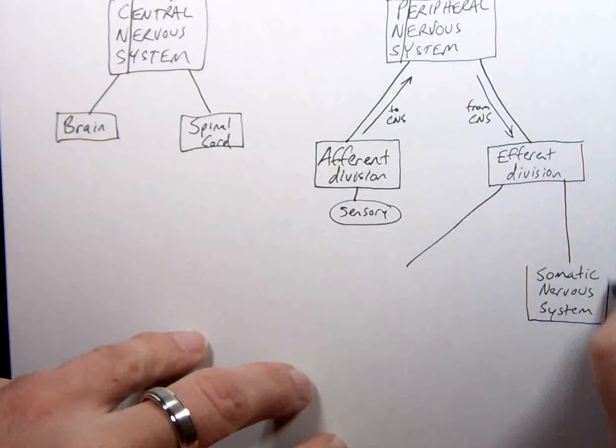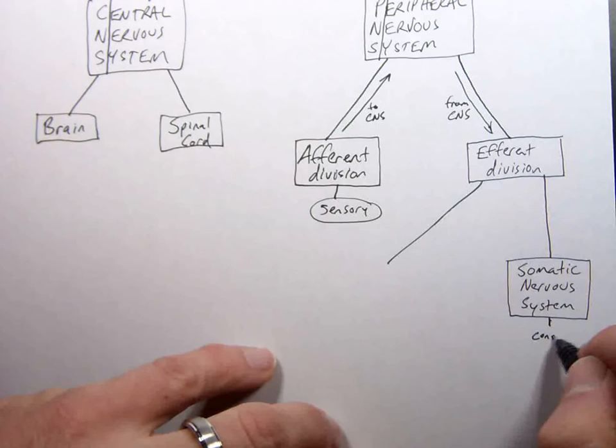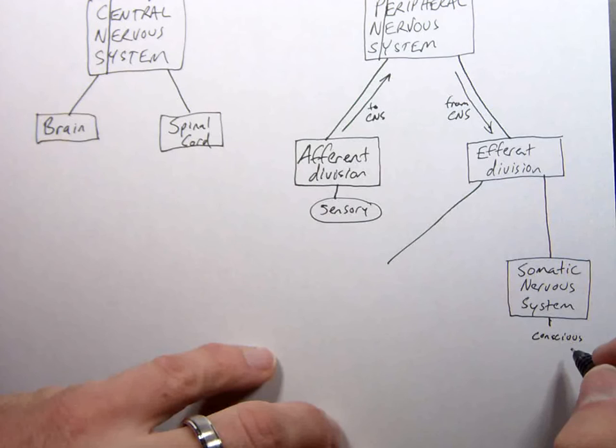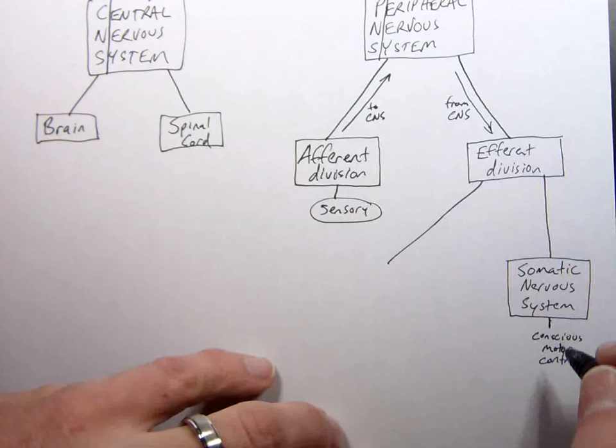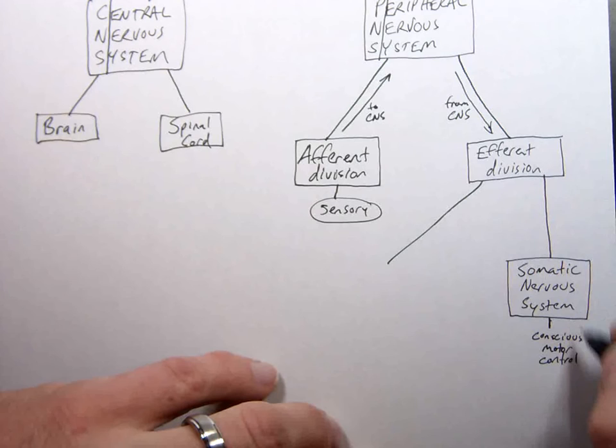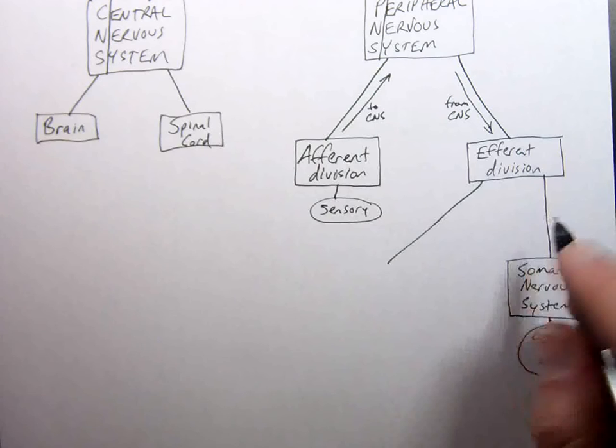Almost to the bottom gang hang on there somatic nervous system. Somatic nervous system we have the ability to control. We have conscious motor control. So right now your hand is forcing your pen to make these letters and you're forcing your head to look up and then back down up and then back down that is all part of the somatic nervous system because it's conscious motor control which is an efferent division of the peripheral nervous system which comes from the central.